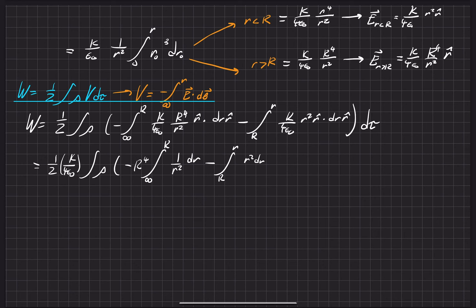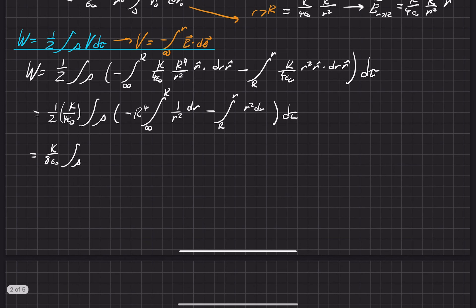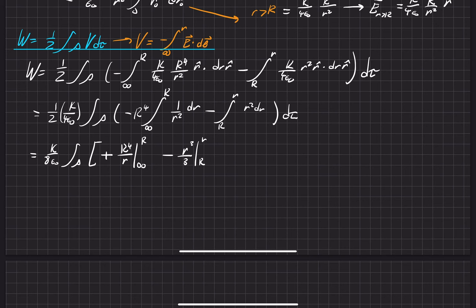Both of these are relatively easy integrals, and this is all to the dτ — some infinitesimal volume element. We combine these to get k over 8ε₀. Turning these into brackets, we evaluate the integrals. This whole thing turns into a positive R⁴ divided by little r, evaluated from big R to infinity, minus r³ divided by three, evaluated from little r to R. The result is negative.